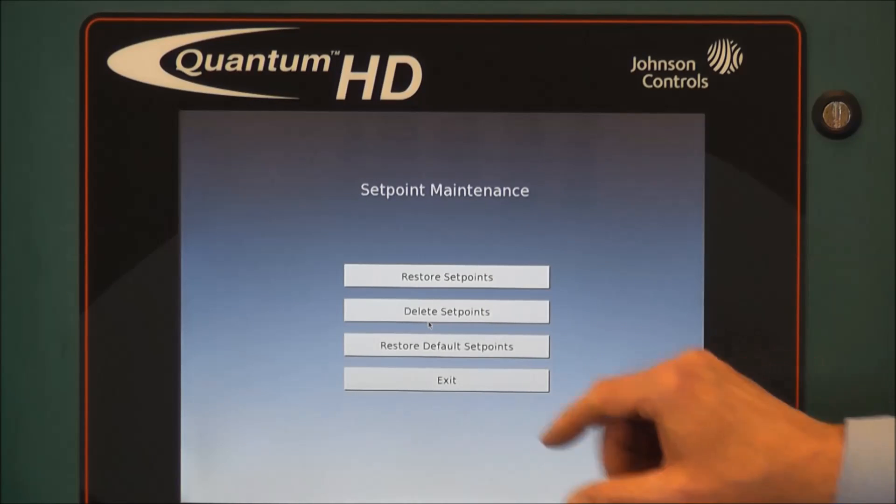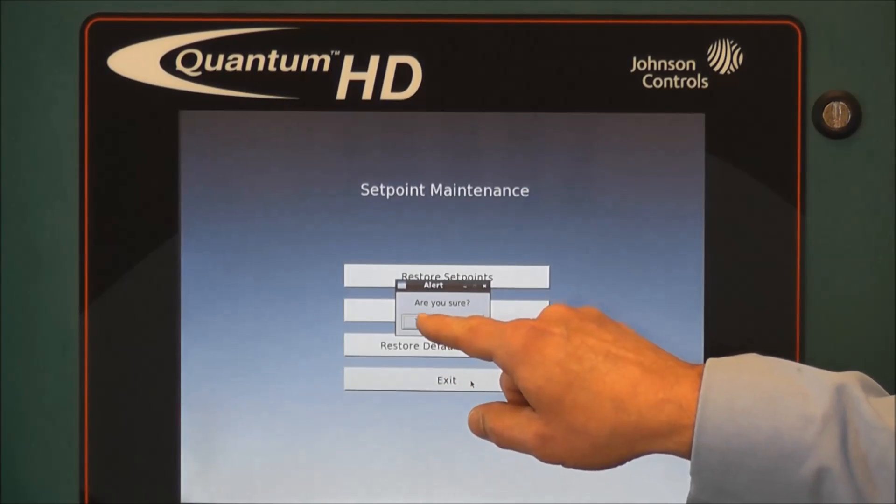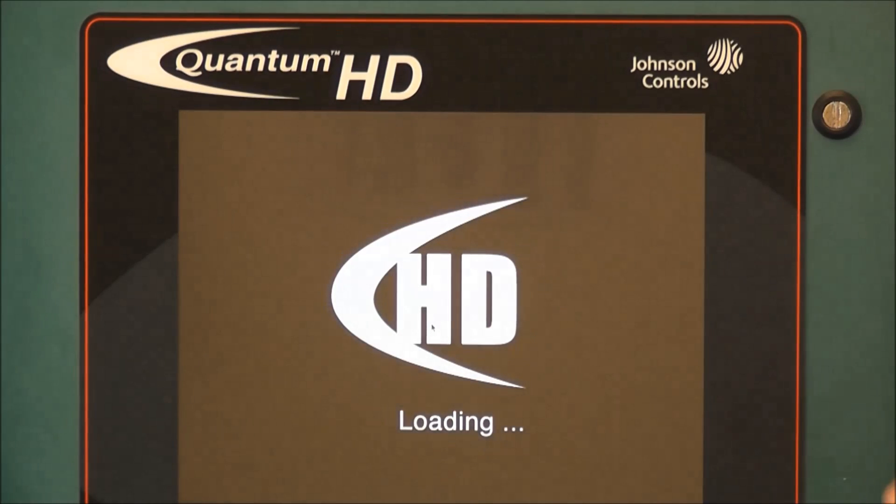Once that has been complete, you'll return to this screen and you'll press exit. It'll ask if you're sure. Press yes. And you'll exit out and it'll actually go through a reboot process on the Quantum HD controller. And that concludes the process for restoring setpoints.